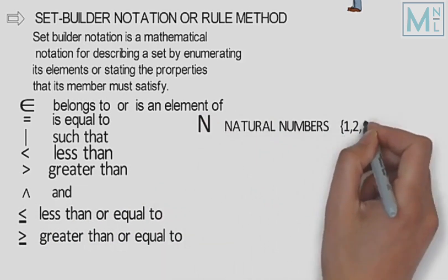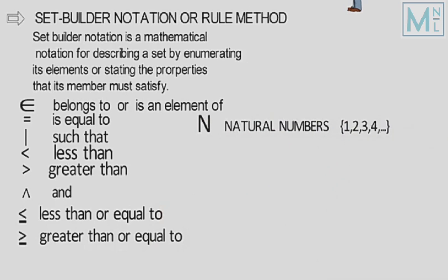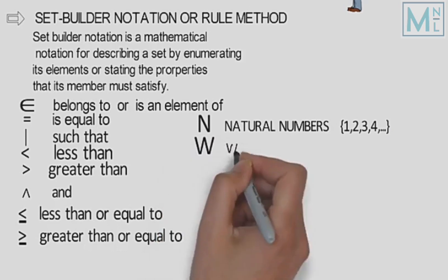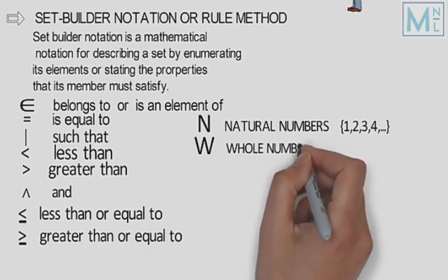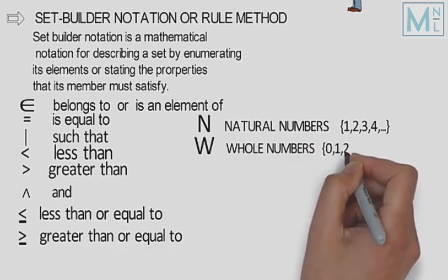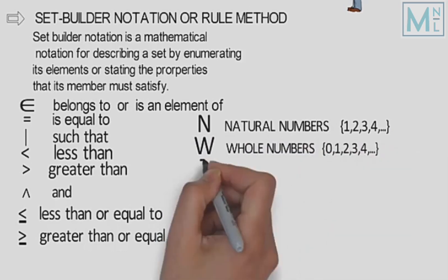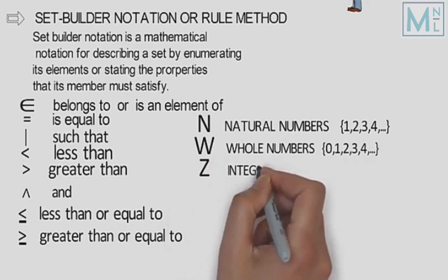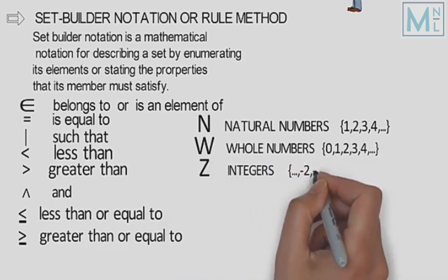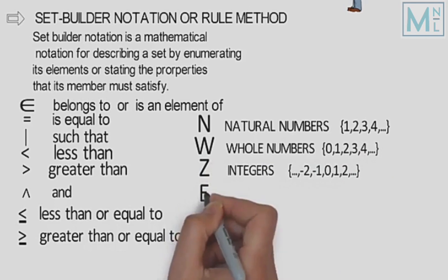Capital N, natural numbers ko represent karta hai, jo counting ke liye use hota hai, jinn ki shuruwat one se hoti hai. Capital W, whole numbers ko present karta hai, jinn ki shuruwat zero se hoti hai, phir counting numbers aate hain. Capital Z, integers kailaate hain, jinn mein negative numbers aur whole numbers hote hain. Yeh capital E, even numbers.